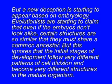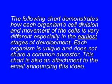A new deception is starting to appear based on embryology: evolutionists now claim that even if the embryos don't look alike, certain structures are so similar they must share a common ancestor. But this ignores that the initial stages of development follow very different patterns of cell division and become very different structures in mature organisms. The following chart demonstrates how each organism's cell division and cell movement are very different, especially in the earliest stages — each organism is unique and does not share a common ancestor.